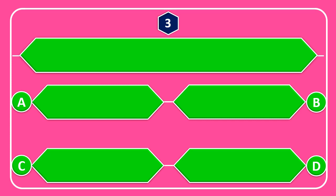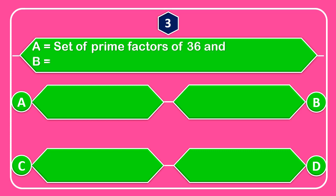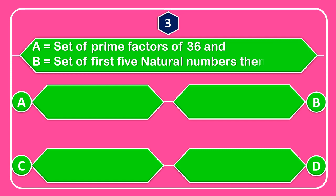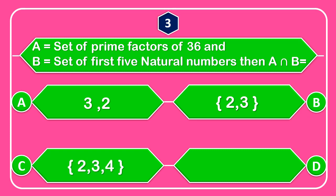Question number 3: A is equal to the set of prime factors. Options: A — 3, B — 2,3, C — 2,3, D — 2,3.